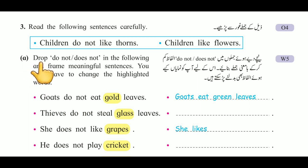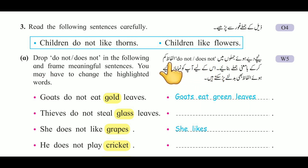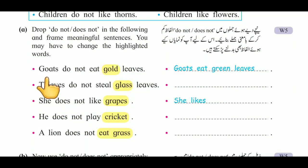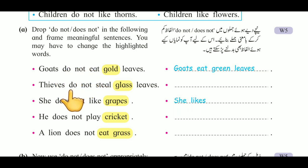Now, question A: Drop 'do not' or 'does not' in the following sentences and frame meaningful sentences. نیچے دیے ہوئے جملوں میں do not یا does not الفاظ کم کرکے بامعنی جملے بنائیے۔ You may have to change the highlighted words. اس کے لیے آپ کو نمایاں کیے ہوئے الفاظ بھی بدلنے پڑ سکتے ہیں۔